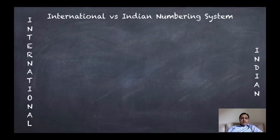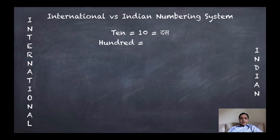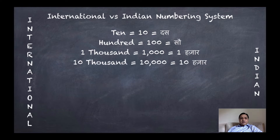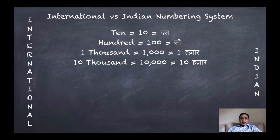Let me first show you the international versus Indian numbering system. If you look at the international numbering system, it starts with 10, which is equal to Das in the Indian system; 100, which is equal to Sau in the Indian system; 1,000, which is Ek Hazar; and 10,000, which is Das Hazar. Till here, everything is pretty clear and simple because you have a direct conversion between the international and Indian numbering systems. But after this, things start to become a little tricky.